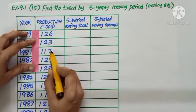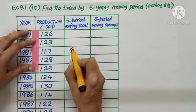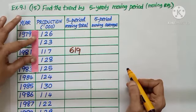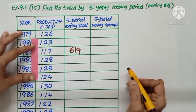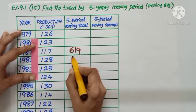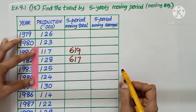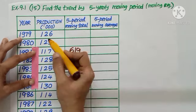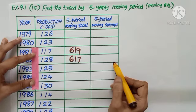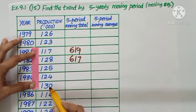Where will you put the middle? These are the five values, the middle will be third one, so put the answer here. What is the total? It is 619. Now forget the first value, keep moving. I am going to add 123, 117, 128, 125, 124. The total: 617. Again keep moving. So each time leave one value. First time I left out 126, now I left out 123. Add the values: 117, 128, 125, 124, 130. The total is 624.